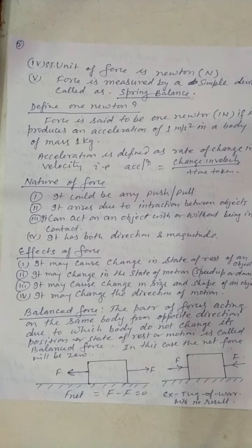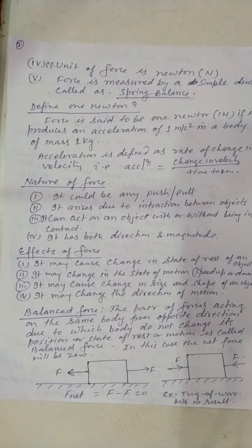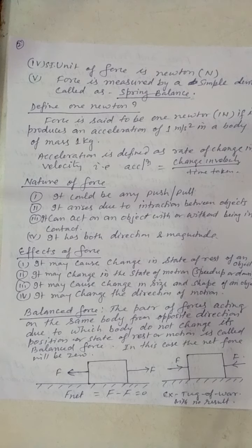Similarly, a question arises: what do you mean by acceleration? Acceleration is defined as the rate of change of velocity, that is, acceleration equals change in velocity divided by time taken, and its unit is meter per second squared.